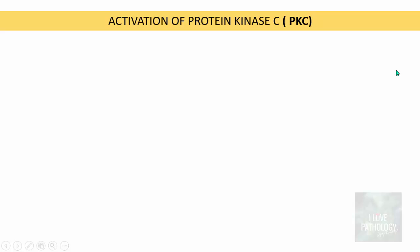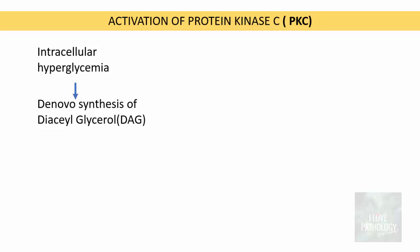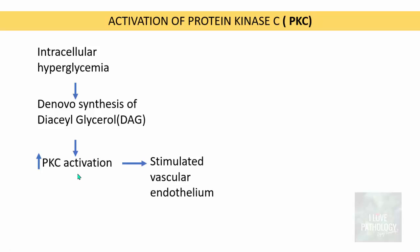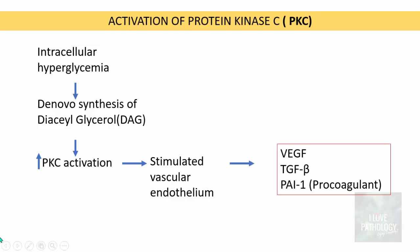Apart from advanced glycation end products, hyperglycemia in diabetes also leads to activation of protein kinase C. Intracellular hyperglycemia results in de novo synthesis of diacylglycerol, which increases protein kinase C activation. Protein kinase C stimulates the vascular endothelium to release vascular endothelial growth factor, transforming growth factor beta, and the procoagulant plasminogen activator inhibitor 1. All these again result in microangiopathy. Microangiopathy is therefore due to both AGEs and protein kinase C activation.